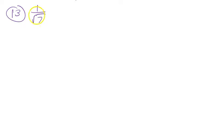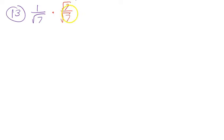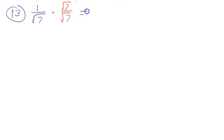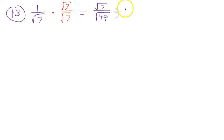Another case: 1 over the square root of 7, where there's no square root on top. Rationalize by multiplying by √7 over √7. On top: 1 times √7 is √7. On the bottom: √7 times √7 is √49, and the square root of 49 is 7. The answer is √7 over 7.